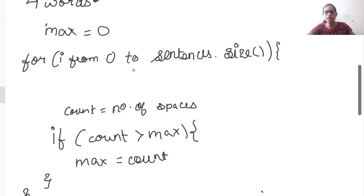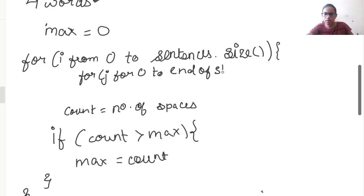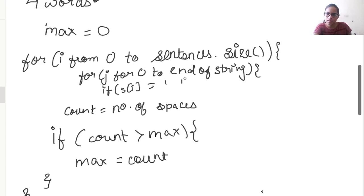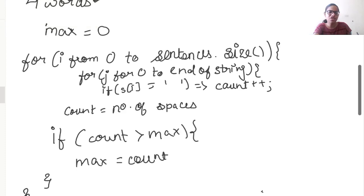For counting the number of spaces, we run an inner loop: for j from 0 to the end of the string. Inside it, we check if the character at sentences[i][j] is equal to a single space. Remember that when comparing with a character in C++, we use single quotations, and for strings we use double quotations — interchanging them will cause an error. If it is equal to a space, then we increase the value of count. This way we use a nested for loop to count the number of spaces and eventually the number of words.